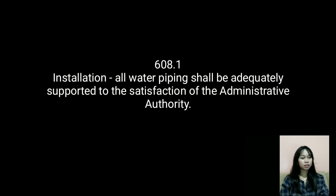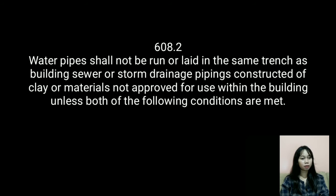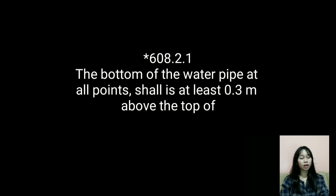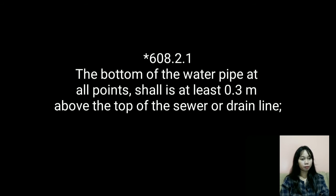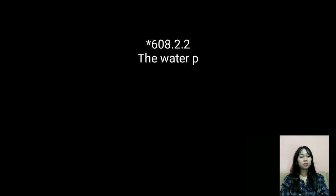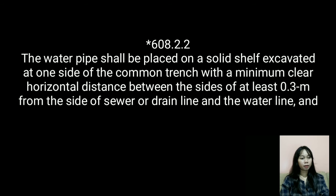All water service yard piping shall be at least 0.3 meter below the finished ground level. Section 608.2: Water pipes shall not be run or laid in the same trench as building sewer or storm drainage piping constructed of clay or materials not approved for use within the buildings, unless both of the following conditions are met. Section 608.2.1: The bottom of the water pipe at all points shall be at least 0.3 meter above the top of the sewer or drain line.